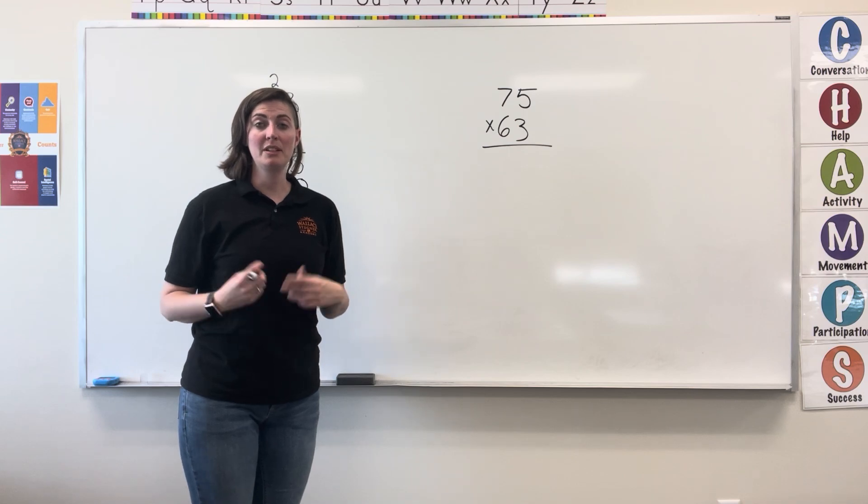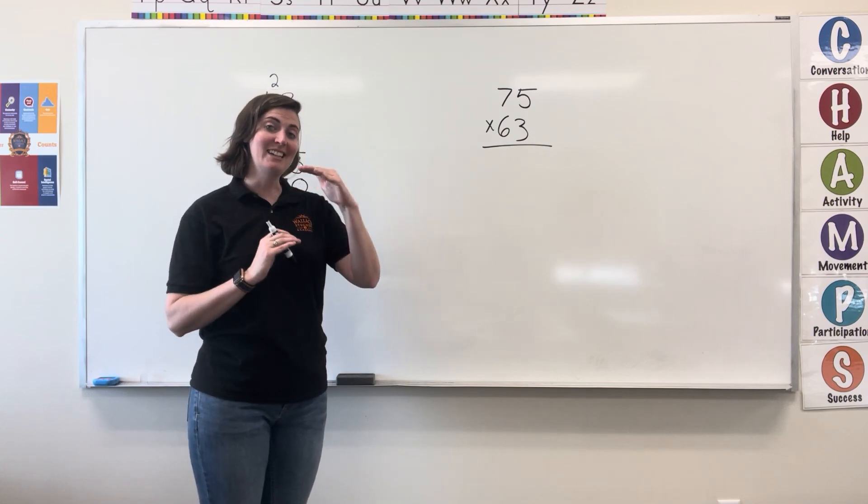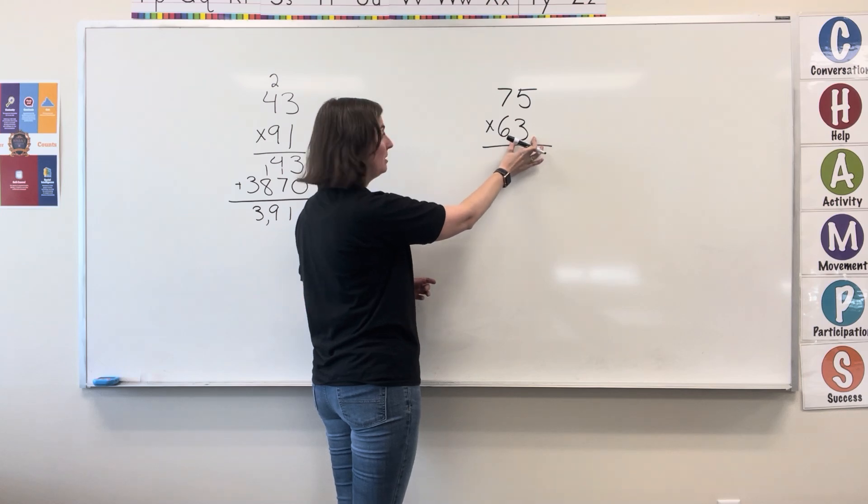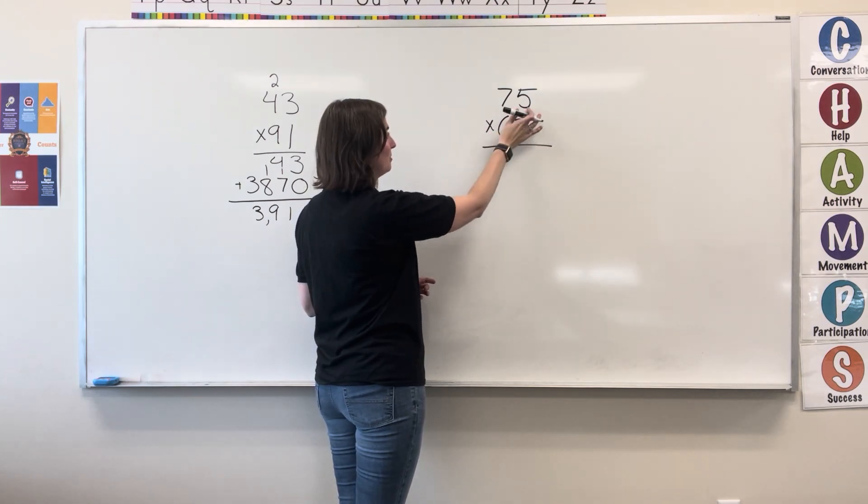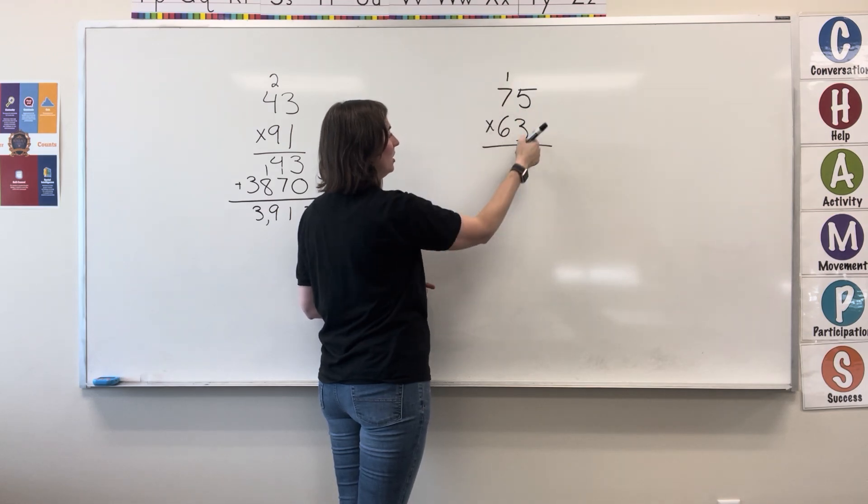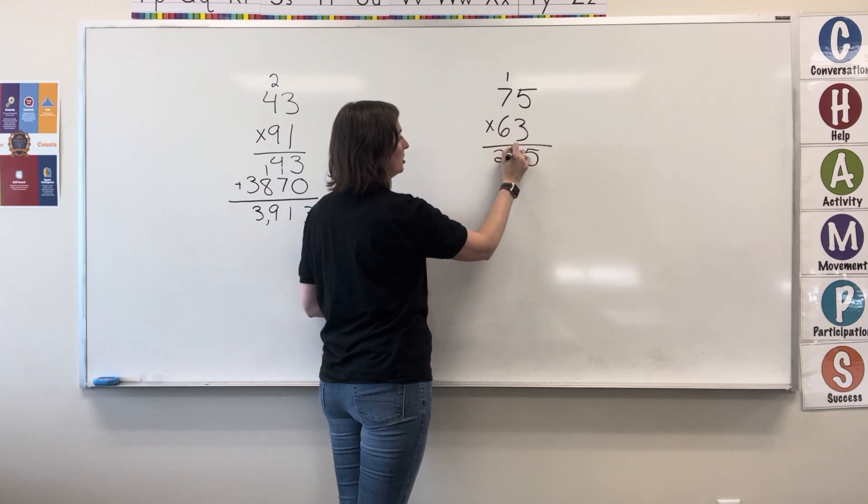One more example using double-digit multiplication stacked up. Starting in the ones place on my bottom number, 3 times 5 equals 15, write the 5, carry the 1. 3 times 7 equals 21, plus 1 equals 22.